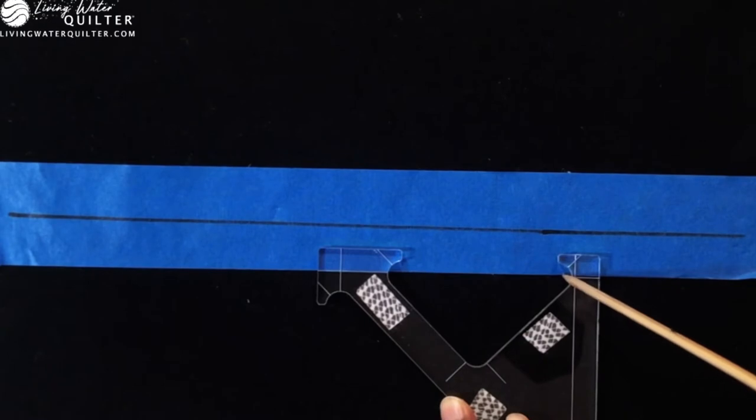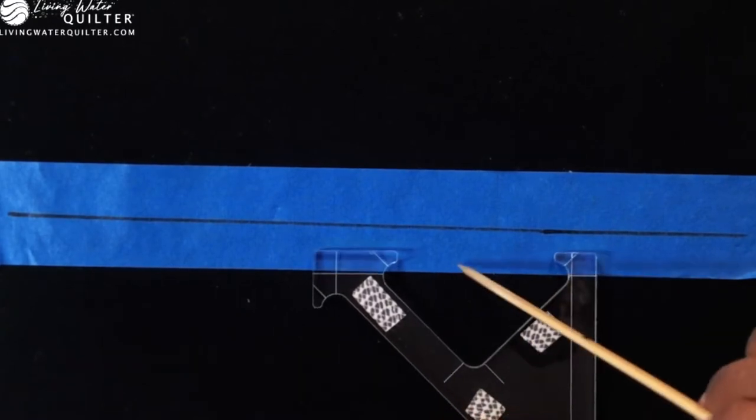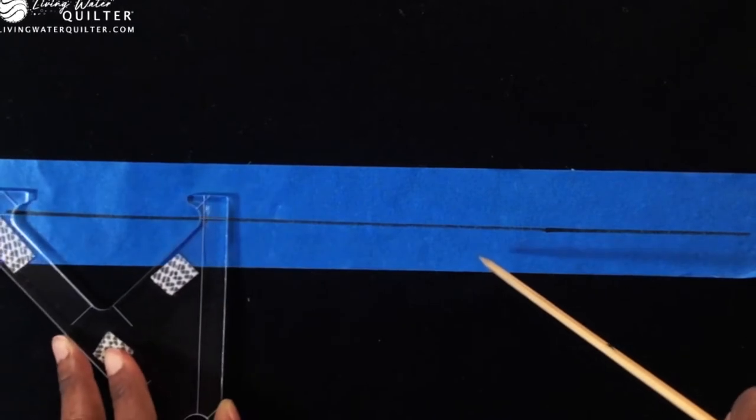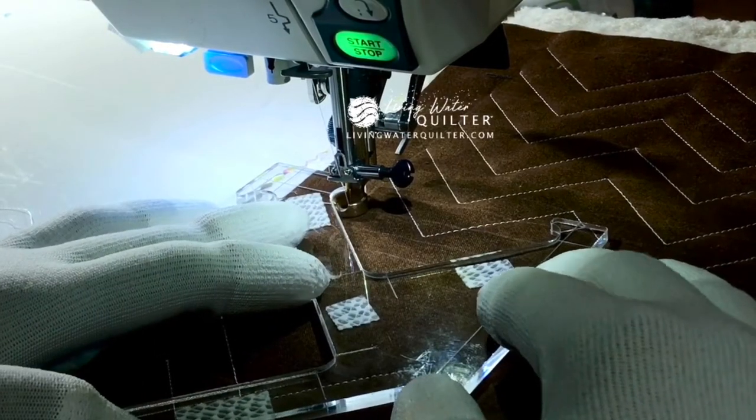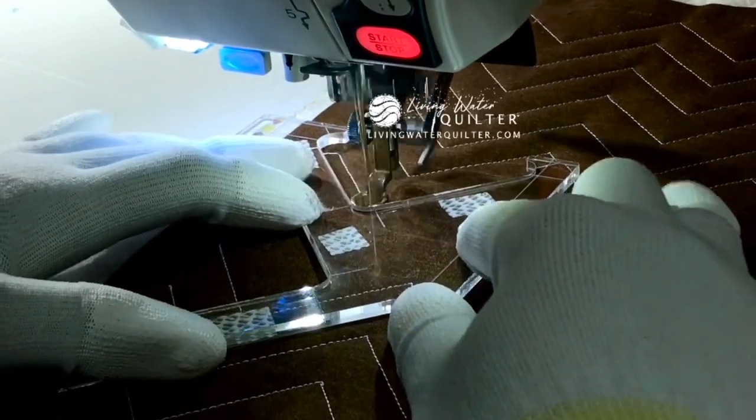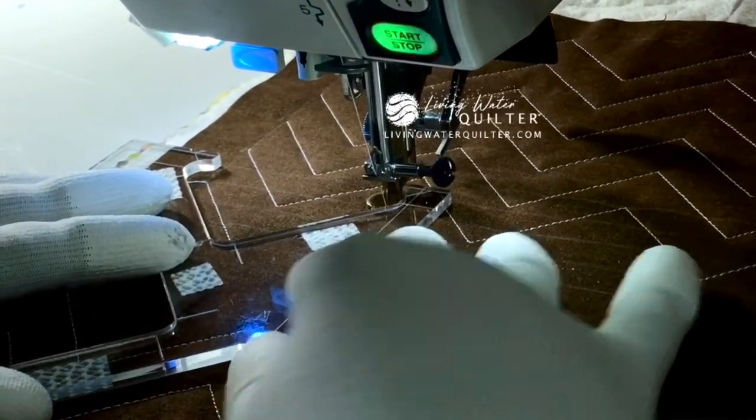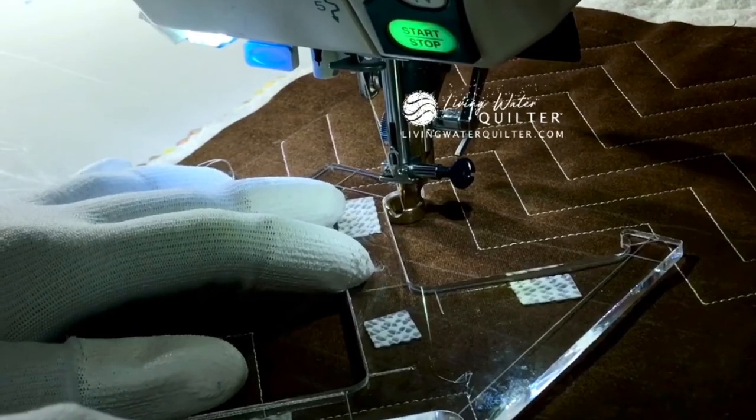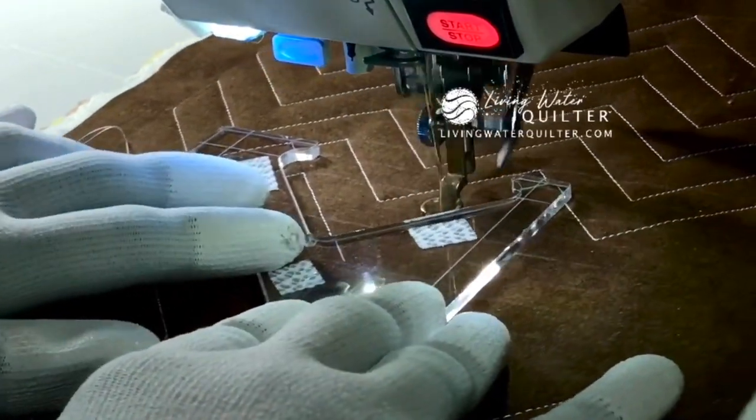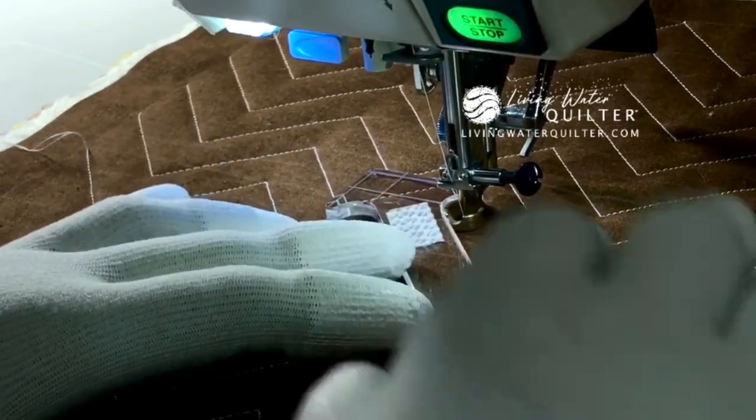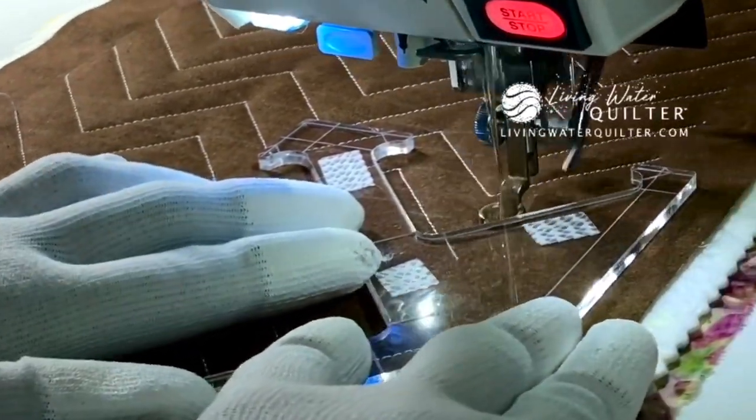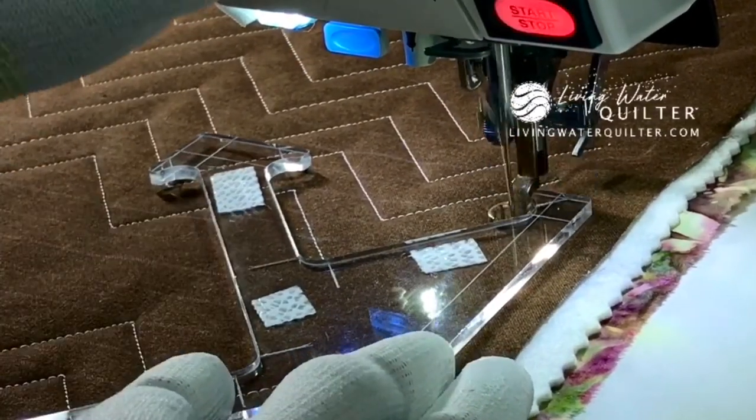Then I come and do the next one, always lining up the reference lines with what I marked on my quilt, and I stitch. Line up this reference line and this one, and I stitch. Slide the template down, always lining up the reference lines before stitching, then I stitch.